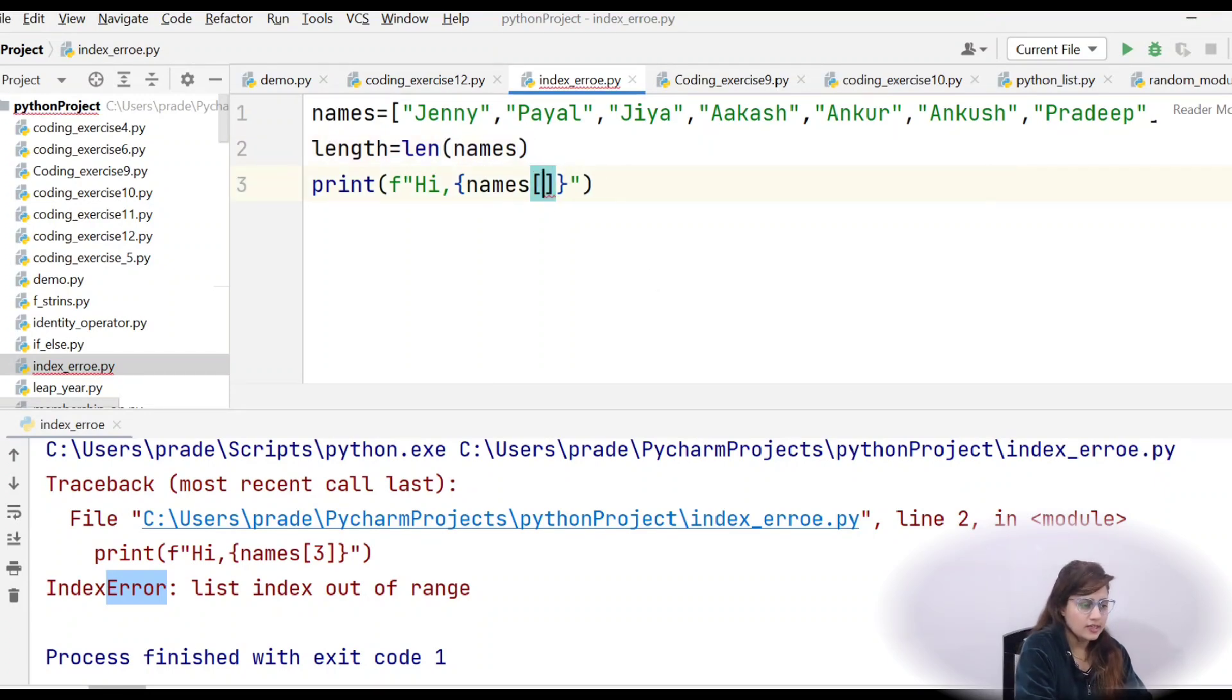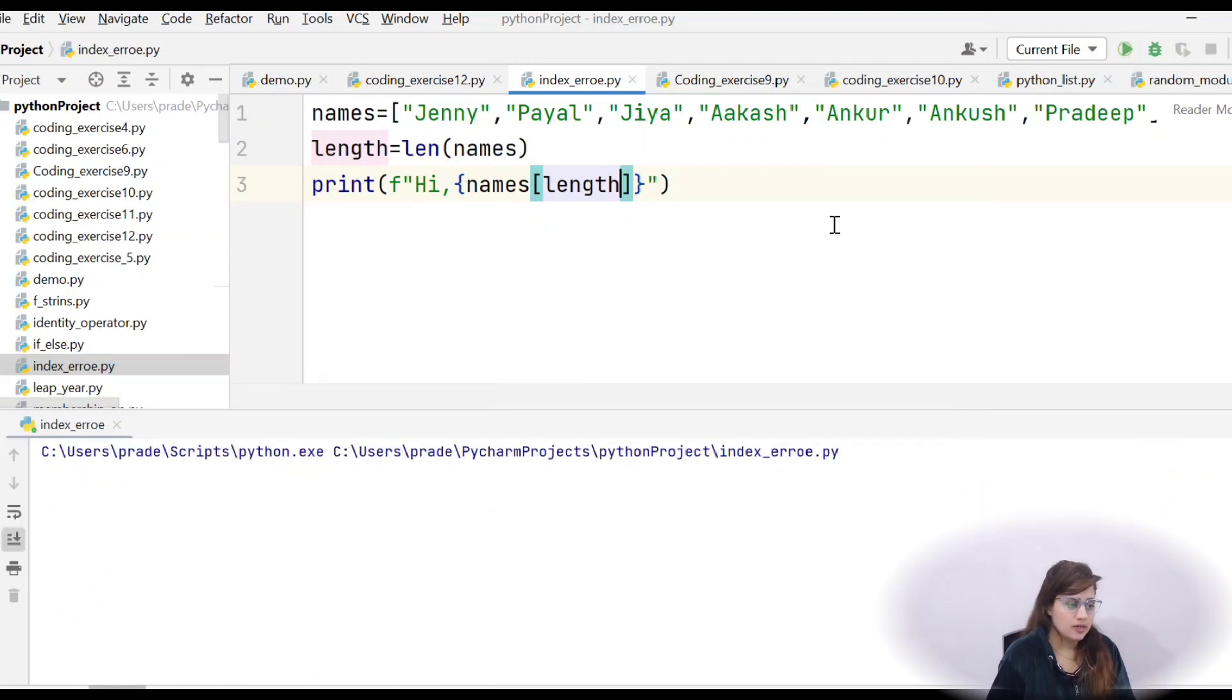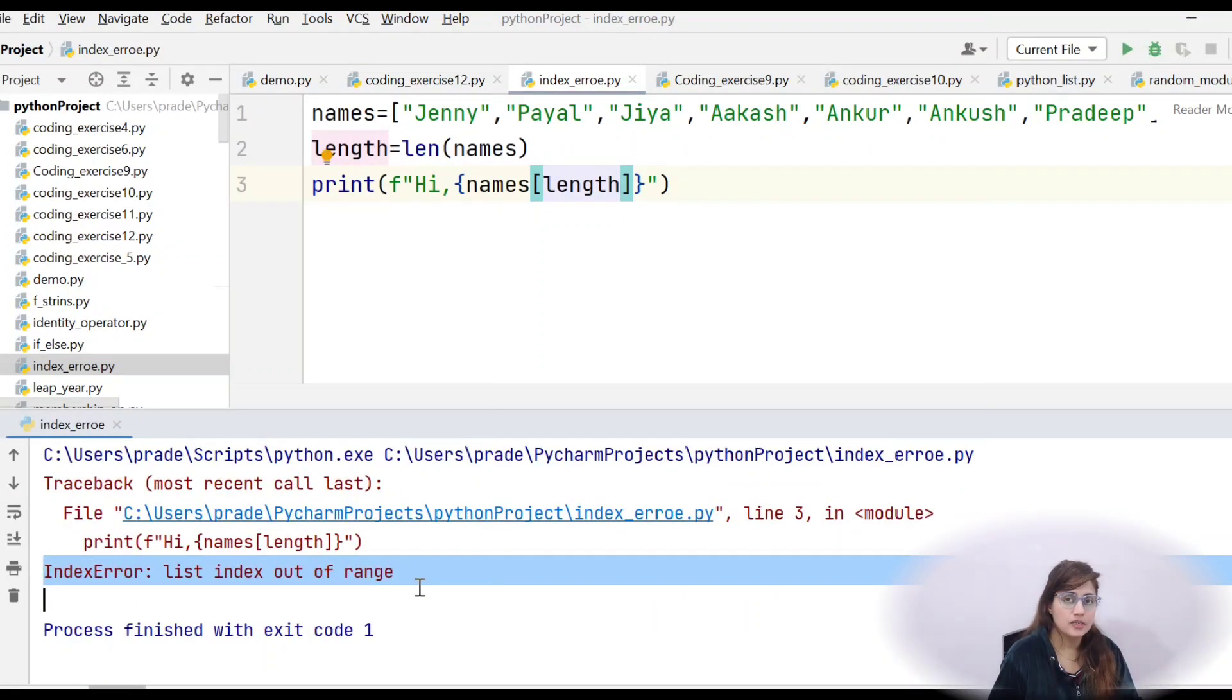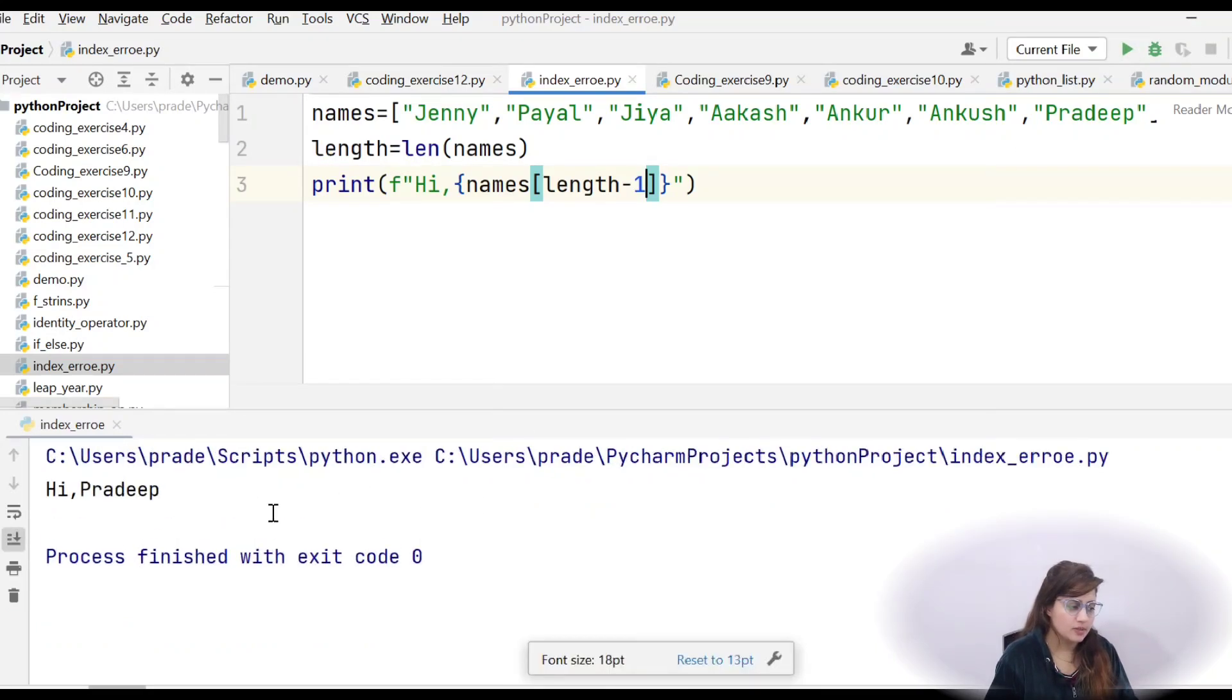But here it's not like that we can pass this length. Let's suppose you pass, you are passing the length and maybe you get, maybe you are thinking you will get high, whatever the last element in the list like high Pradeep. So let's run this and I will show you what output it will get. Again, you are getting index error. List out of index. Because length is what? For this list. 1, 2, 3, 4, 5, 6, 7. But the index start from 0, 0 to 6. So index for Pradeep is 6. So if you want to access the last element, length minus 1. At this time it will print high Pradeep.